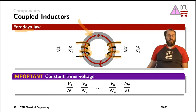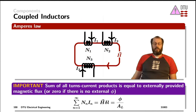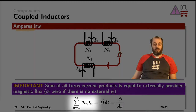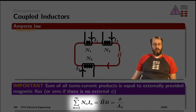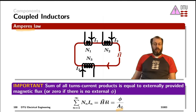Analytically, this means that the voltage per turn is constant for coupled inductors. Furthermore, Ampere's law says that the sum of the number of turns times the currents running through those turns for all turns around one magnetic field is equal to the magnetic flux divided by the AL value. Very often there is no externally applied magnetic flux, and then the summation of all the turns times their respective currents needs to be zero.